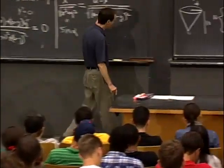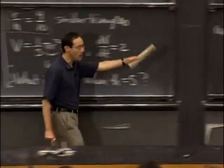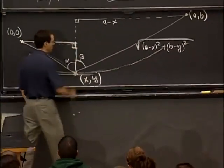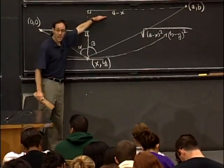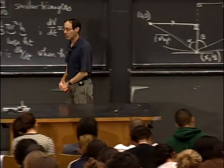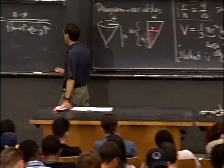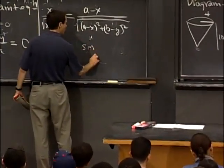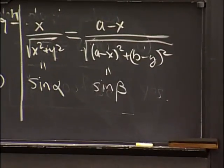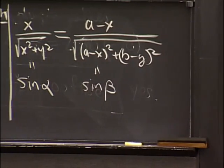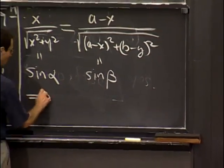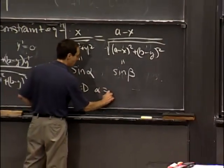Similarly, the other side has an interpretation for the other right triangle. If this angle is β, then the opposite side is a - x. And the hypotenuse is what was in the denominator over there. So this side is sine of β. And so what this condition is telling us is that α = β.